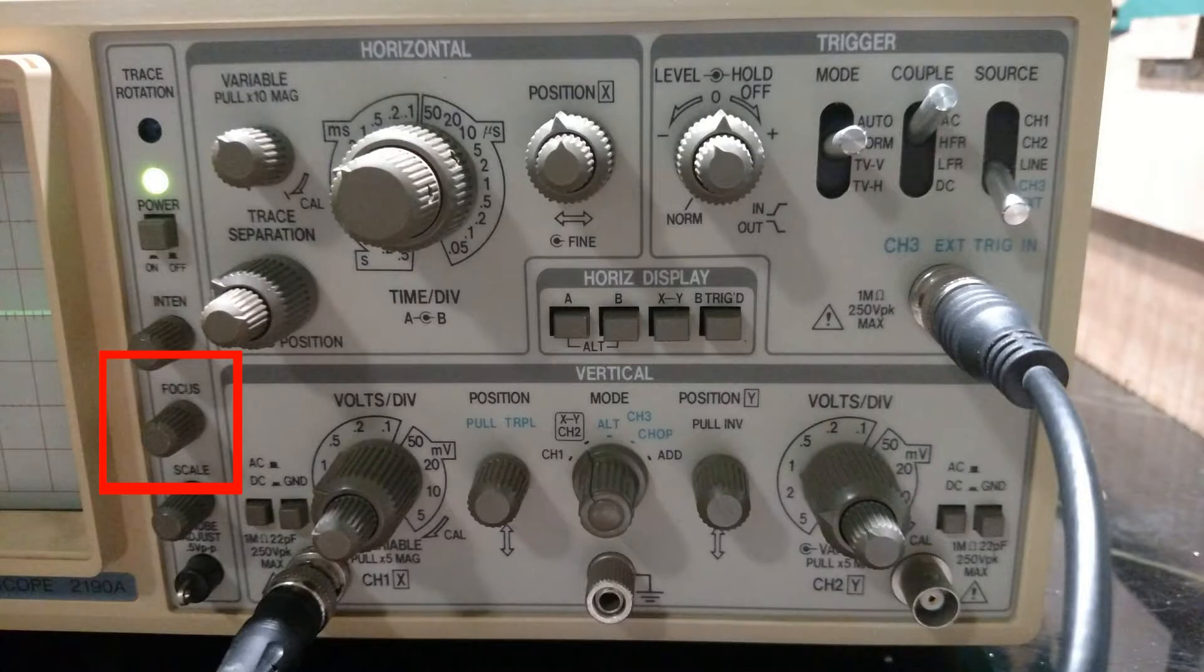The focus knob allows the dot of the trace to be made larger and fuzzier or smaller and sharper. I usually set it to the smallest size that the scope will go.